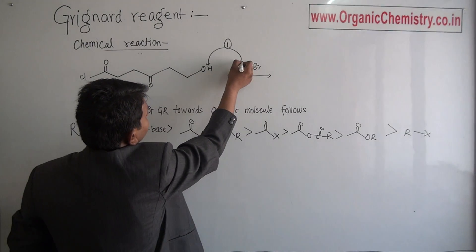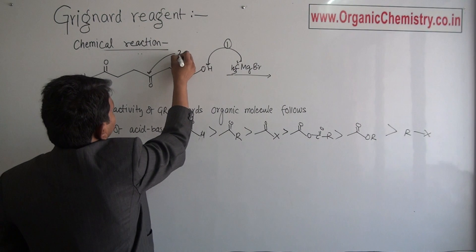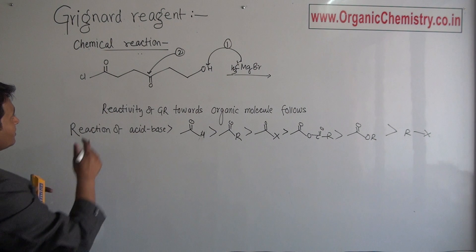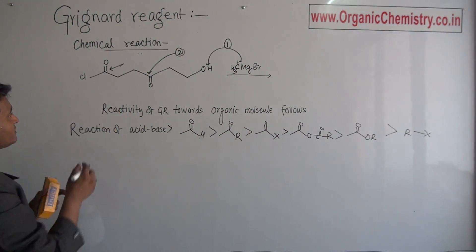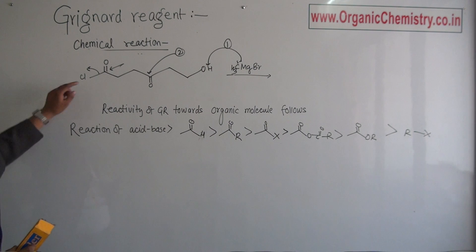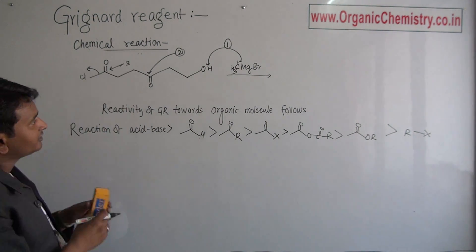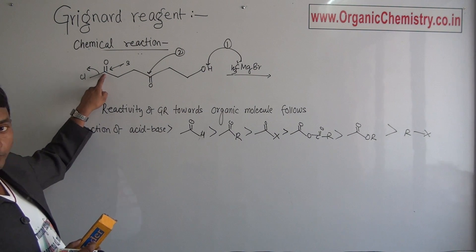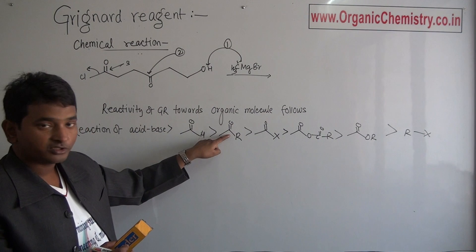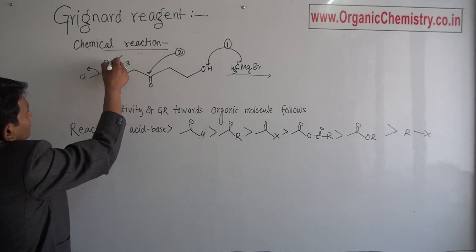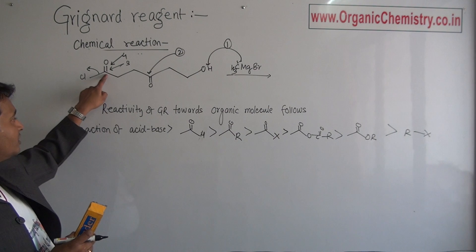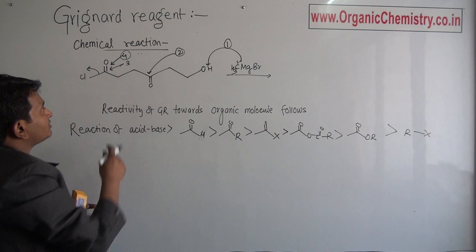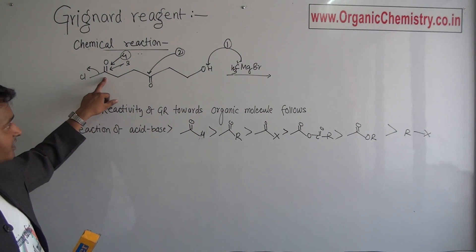The first attack is observed over the acidic hydrogen. Now, reactivity of ketone is higher compared to acid halide, so the second Grignard will attack over the ketone position, not the acid halide position. The third Grignard will attack over the acid halide position and replace the halogen. Now if a CH3 group is attached, a ketone will be obtained as a product. Since ketone is also reactive, a fourth Grignard will attack over this part to form an alkoxide. So four Grignard molecules in total are used for this reaction.